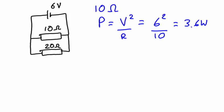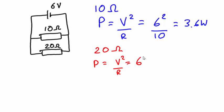Let's do the same exercise for the 20 ohm resistor. Power equals V squared divided by R in a parallel circuit. This time we have 6 squared divided by 20 ohms, which will give us a dissipated power of 1.8 watts.